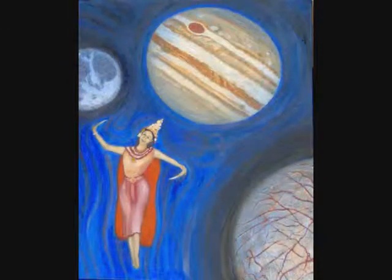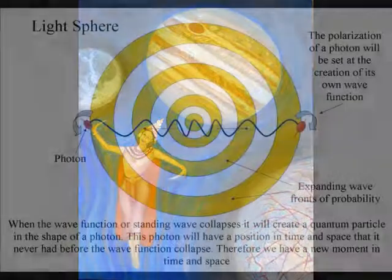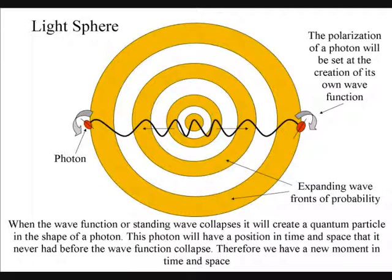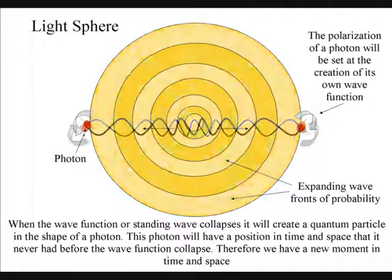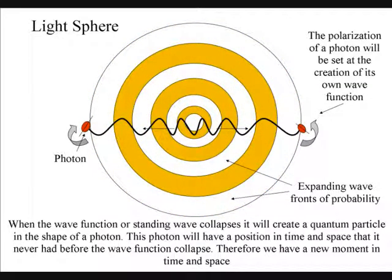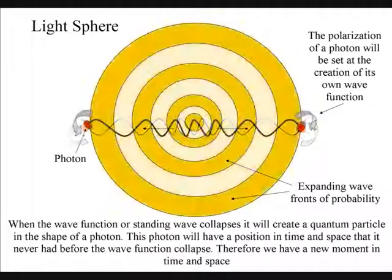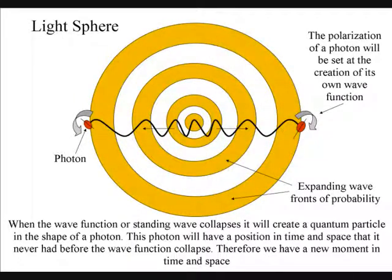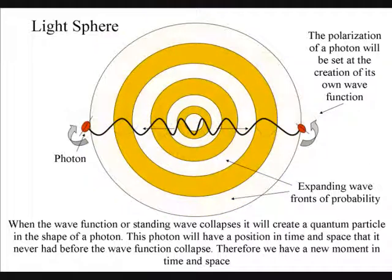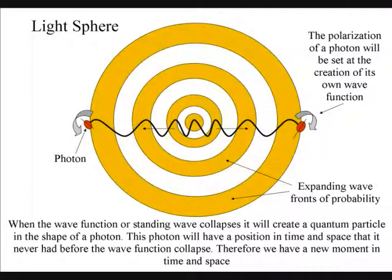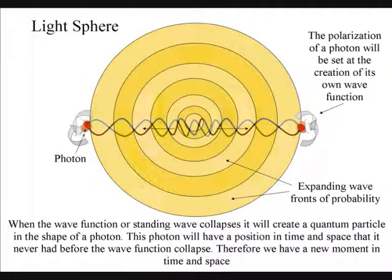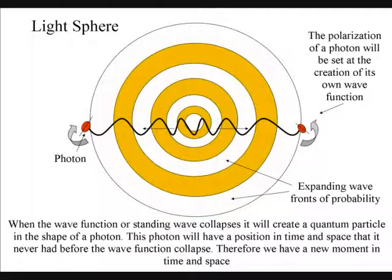However insane this theory might sound, it can explain the paradoxes and weirdness of quantum mechanics. When the wave function or standing wave collapses, it will create a quantum particle in the shape of a photon. This photon will have a position in time and space that it never had before the wave function collapse. Therefore, we have a new moment in time and space.